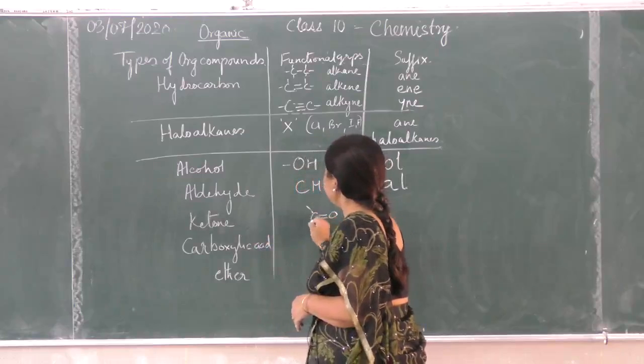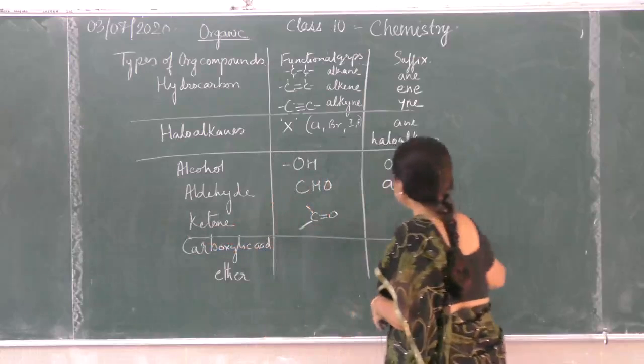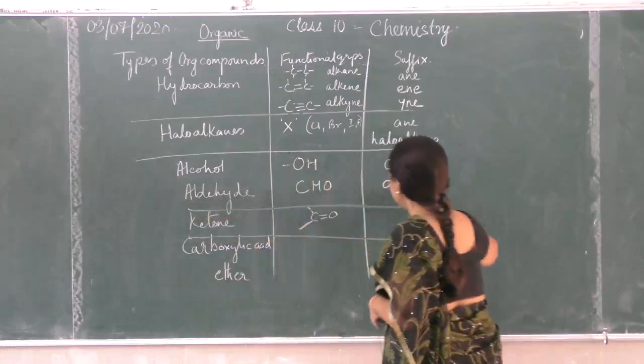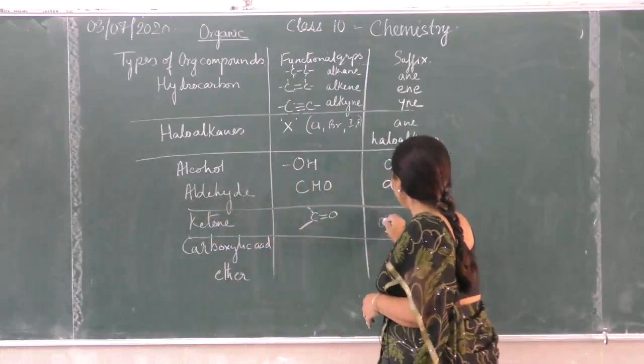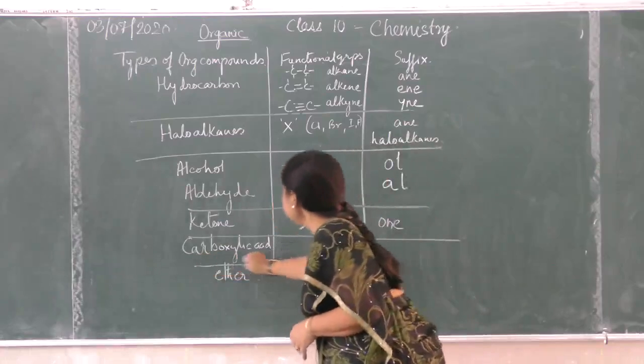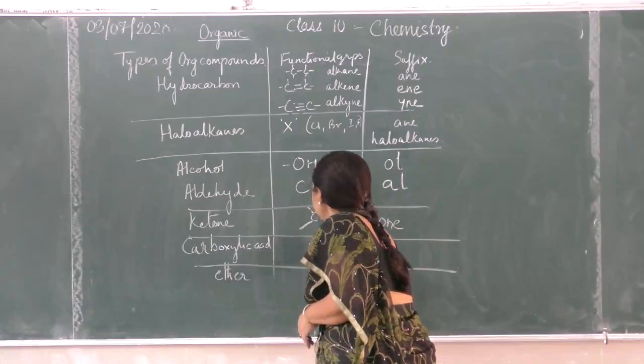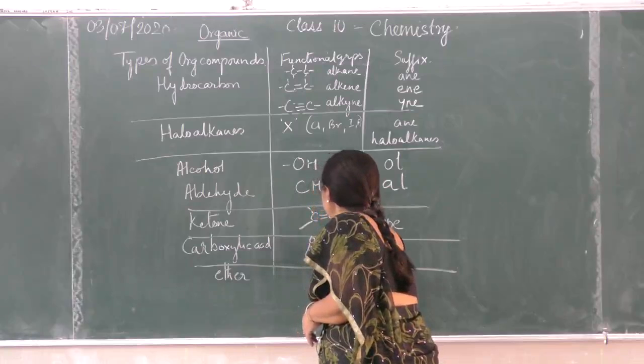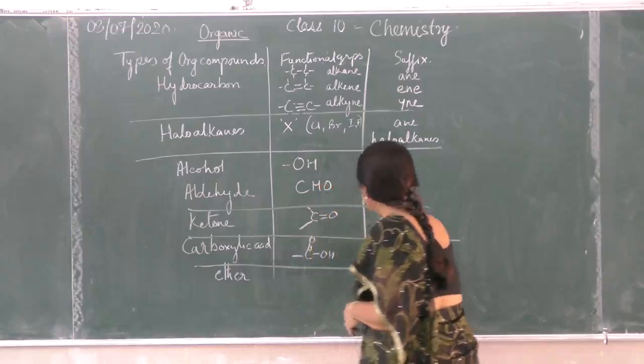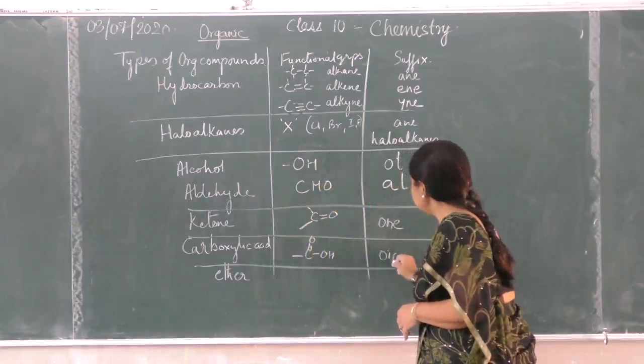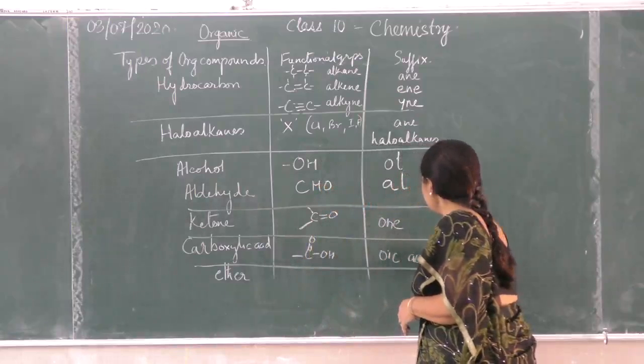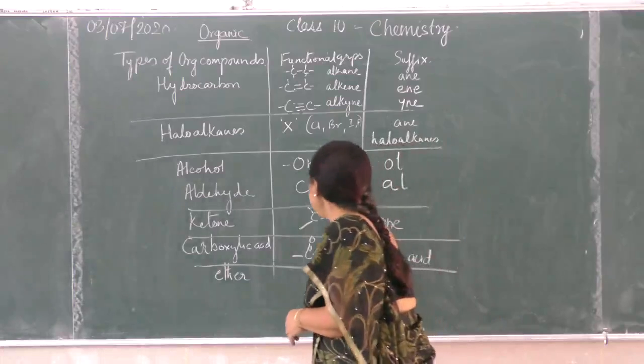Ketone is C double bond O, this group is ketone and the suffix is -one. Carboxylic acid group is COOH, C double bond O OH. This is called -oic acid.